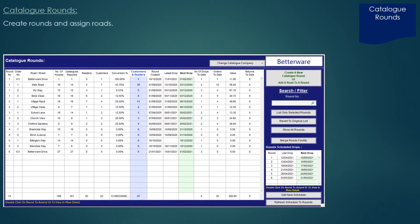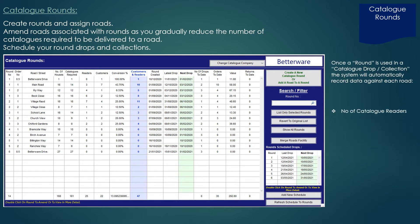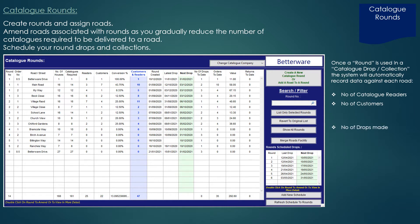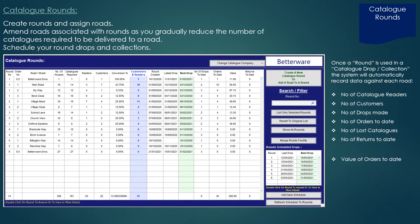Catalogue rounds — creating rounds and assigning roads. You can amend roads associated with rounds as you gradually reduce the number of catalogues required to be delivered to a road. Once a round is used in a catalogue drop or collection, the system will automatically record data against each road: number of readers, number of customers, number of drops made, number of orders to date, number of lost catalogues, number of returns to date, and the value of orders to date.